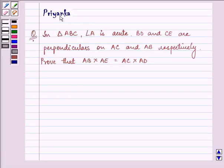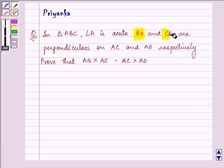Hi and how are you all today? The question says, in triangle ABC, angle A is acute. BD and CE are perpendiculars on AC and AB respectively. Prove that AB into AE is equal to AC into AD.